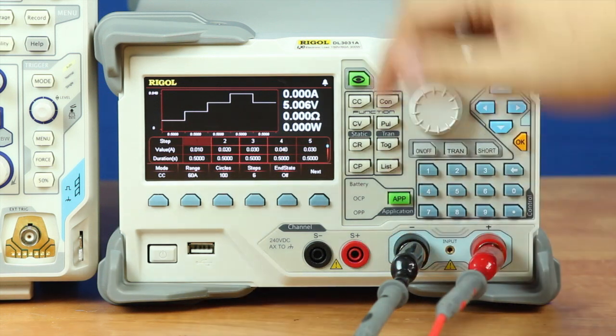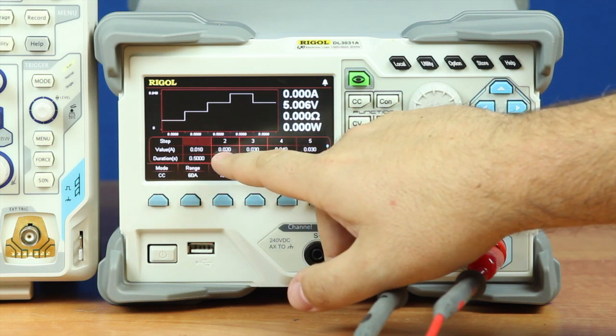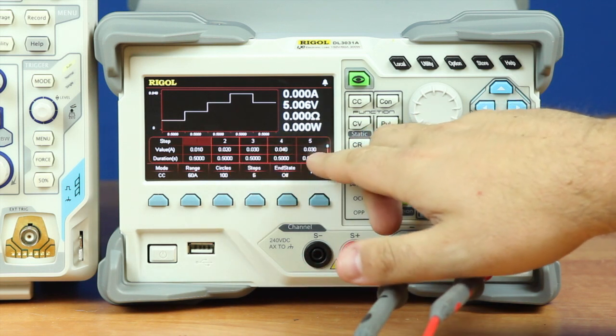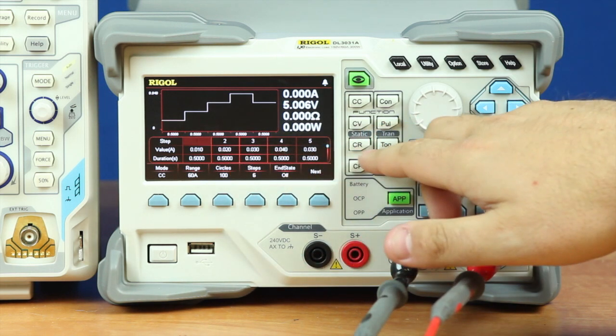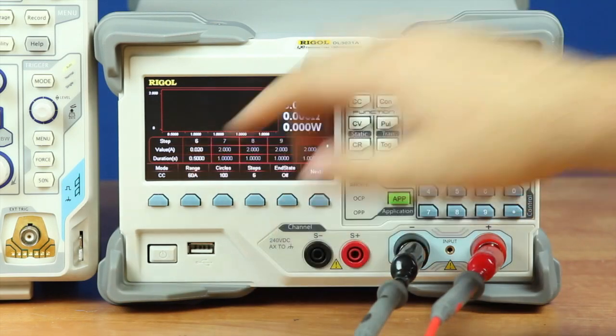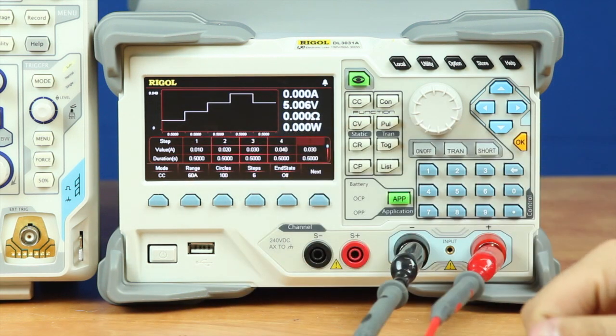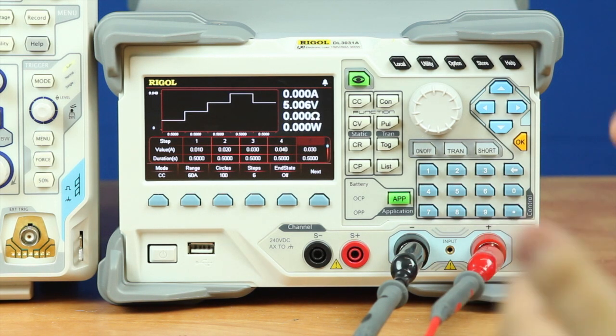On our steps we'll increase our amperage. The first one is at 10 milliamps, then 20 milliamps, then 30, then 40, then back down to 30 milliamps, and step six will be 20 milliamps. For duration, they'll last about half a second for each step level, then it increases and loops back.